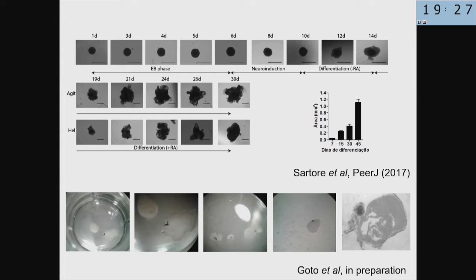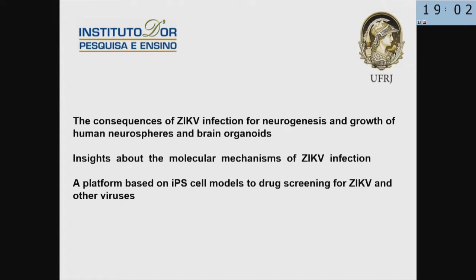We can follow the growth of brain organoids day by day and observe the clear formation of their layers. We also started to see some pigment epithelium characteristic of the eyes — so in some organoids we can see the formation of the retina. With that in mind, I'll show the consequences of Zika infection for neurogenesis, some insights into molecular mechanisms, and finally a platform based on iPS cells to screen for new drugs against Zika virus infection in the brain.